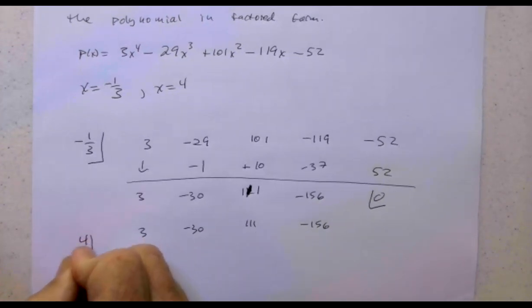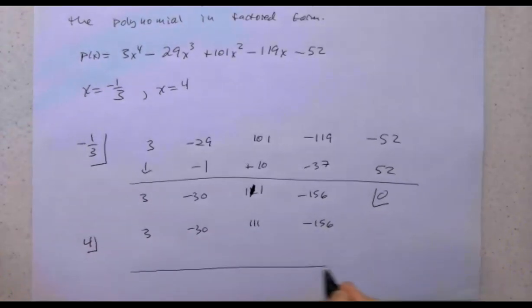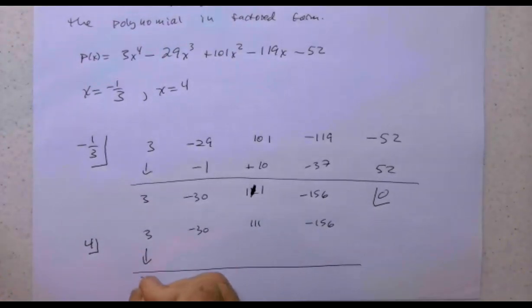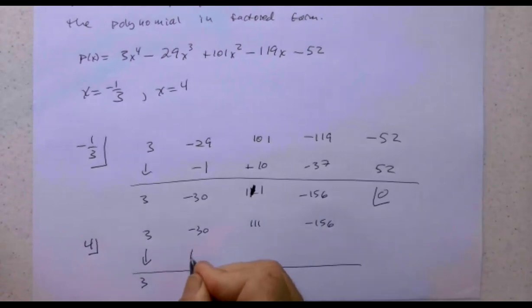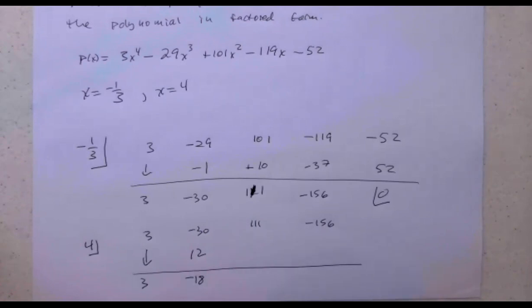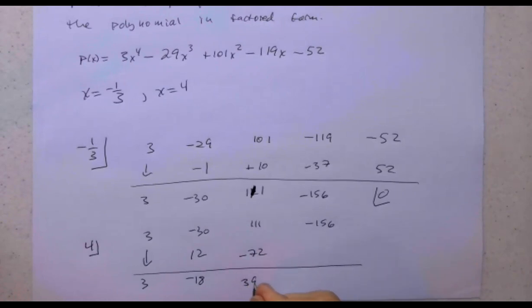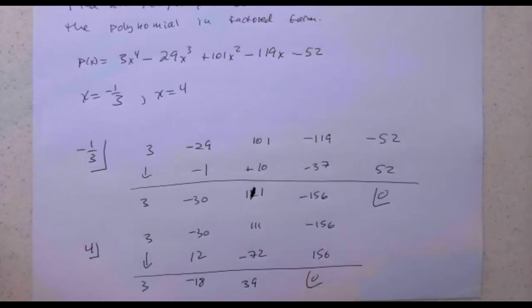Pull the three down. 4 times 3 is 12. -30 and 12 is -18. 4 times -18 is -72. 111 minus 72 is 39. And 4 times 39 is 156. And then zero. So indeed, negative one third and four are zeros.